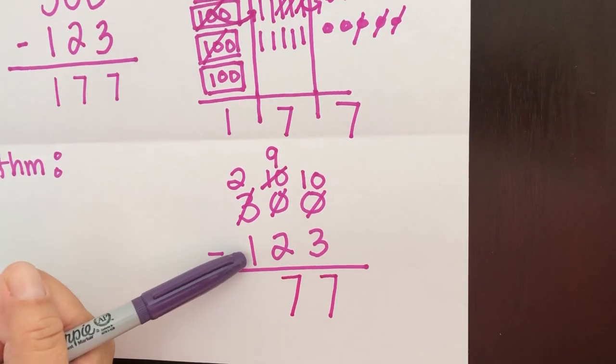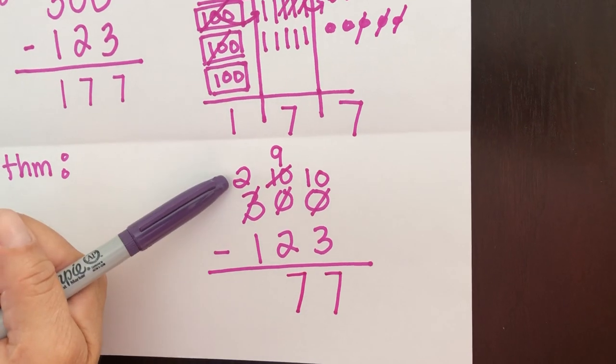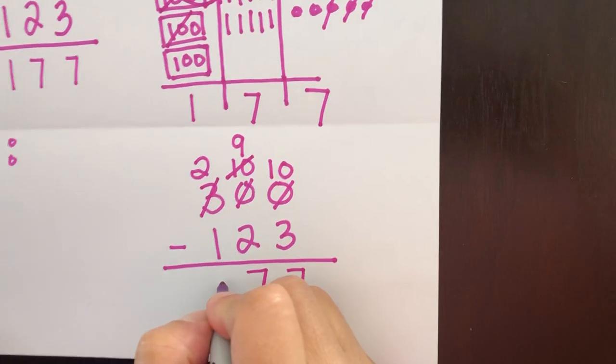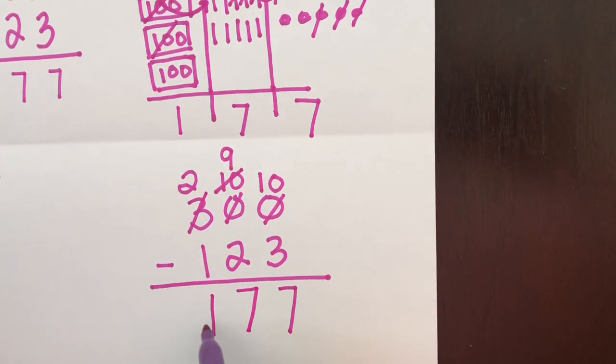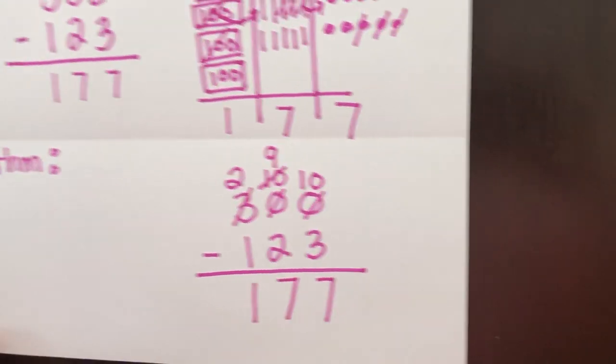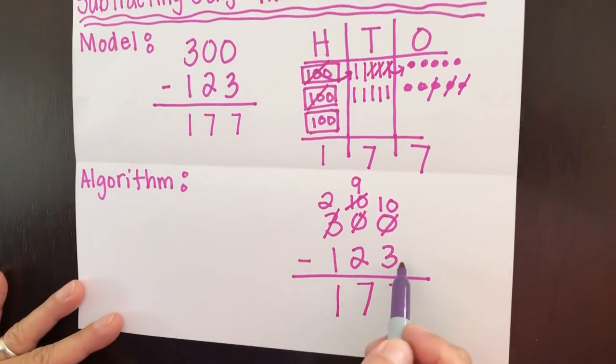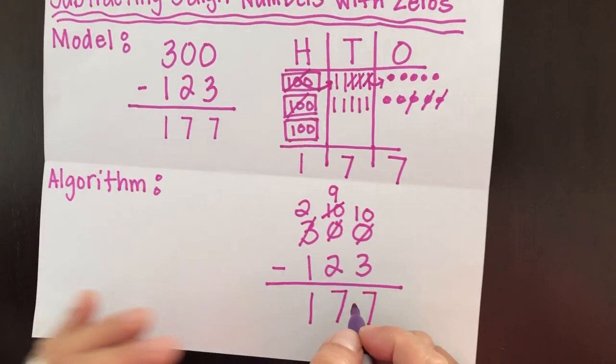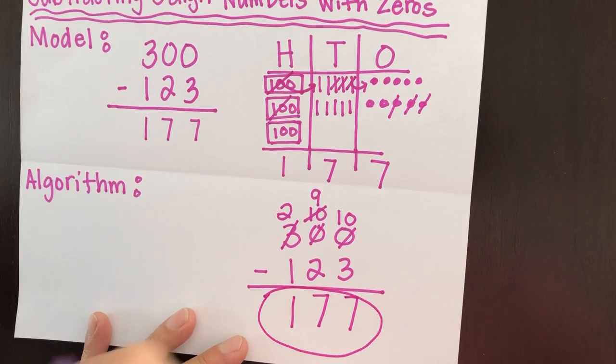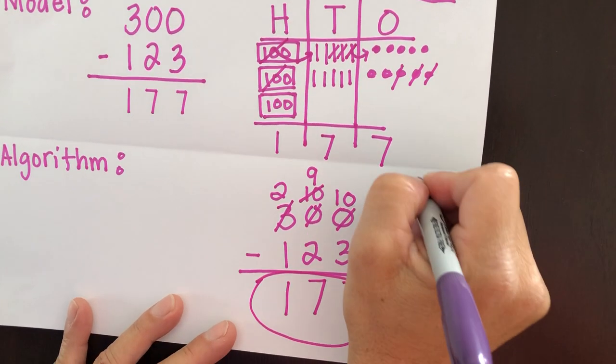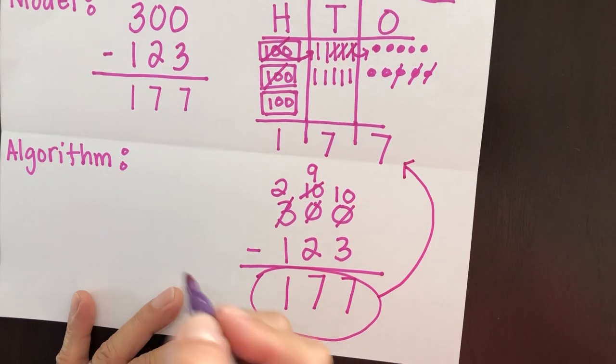Now we're ready to subtract from the hundreds column. And this says two take away one is one. So our difference is 177. 300 minus 123 is 177. And if you notice.